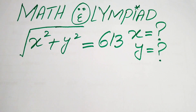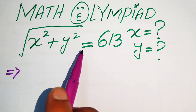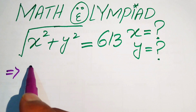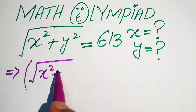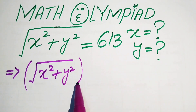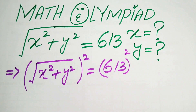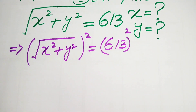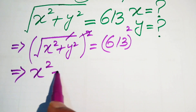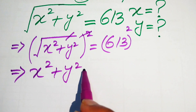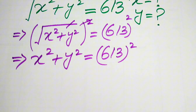The very first step is to square both sides of the equation. When you square the left side, the square root is eliminated, giving us x² plus y². Squaring the right side gives 613², so we have x² + y² = 613².